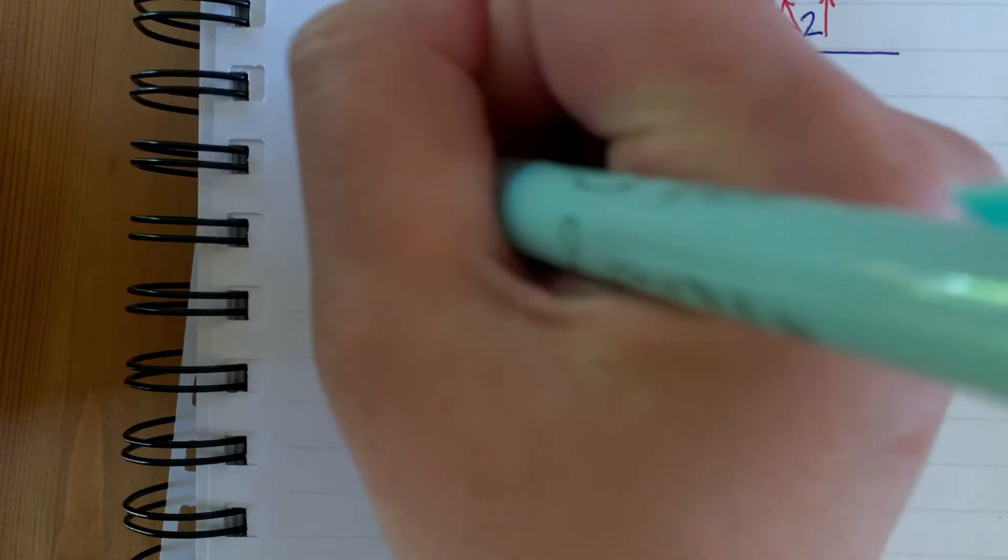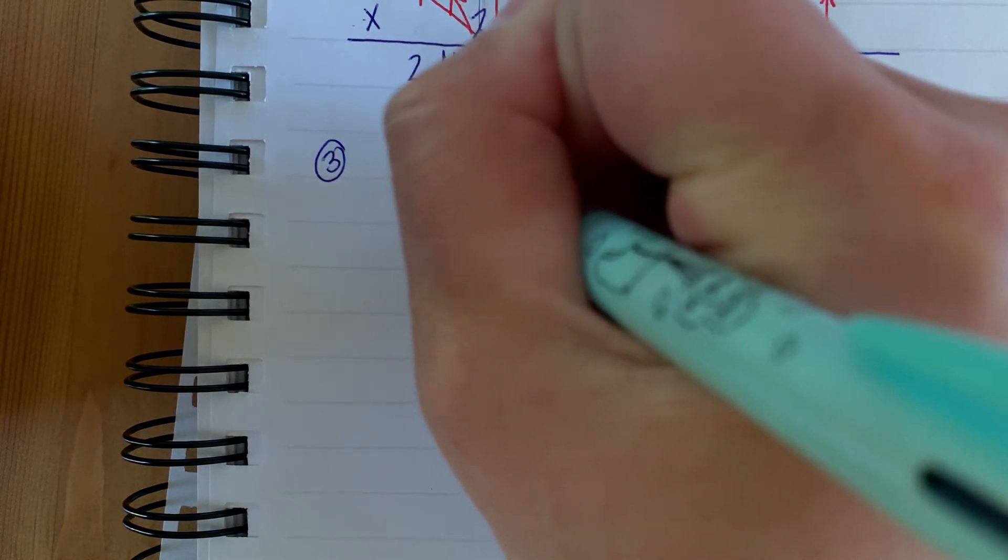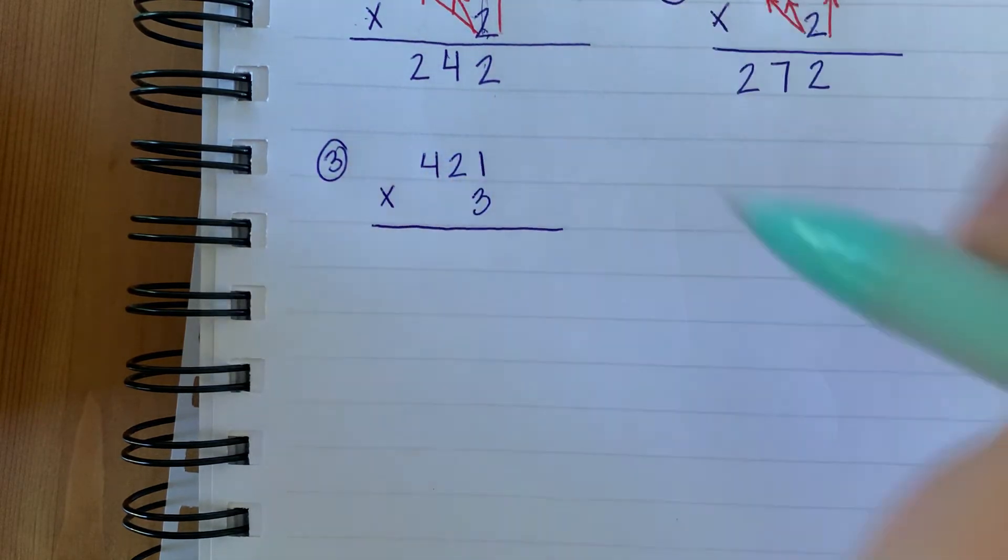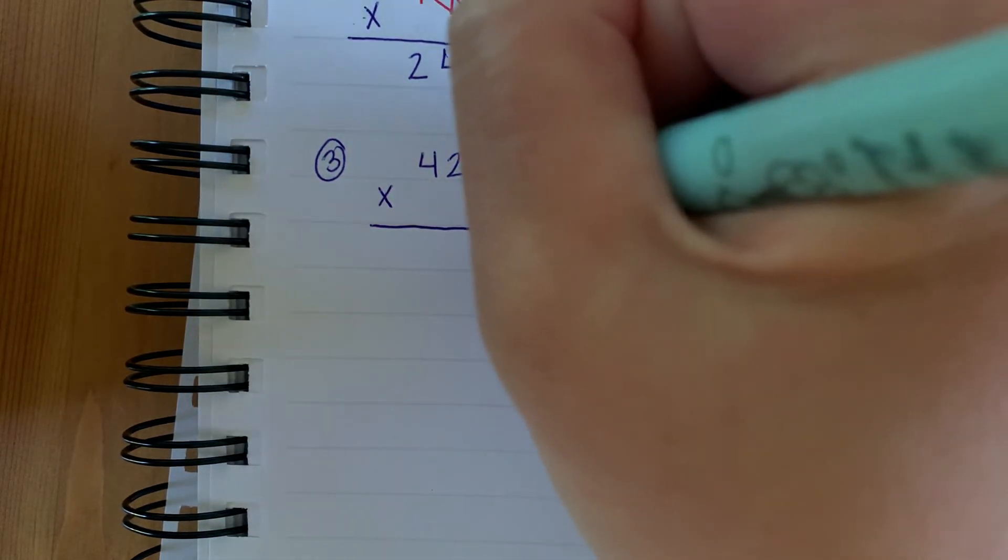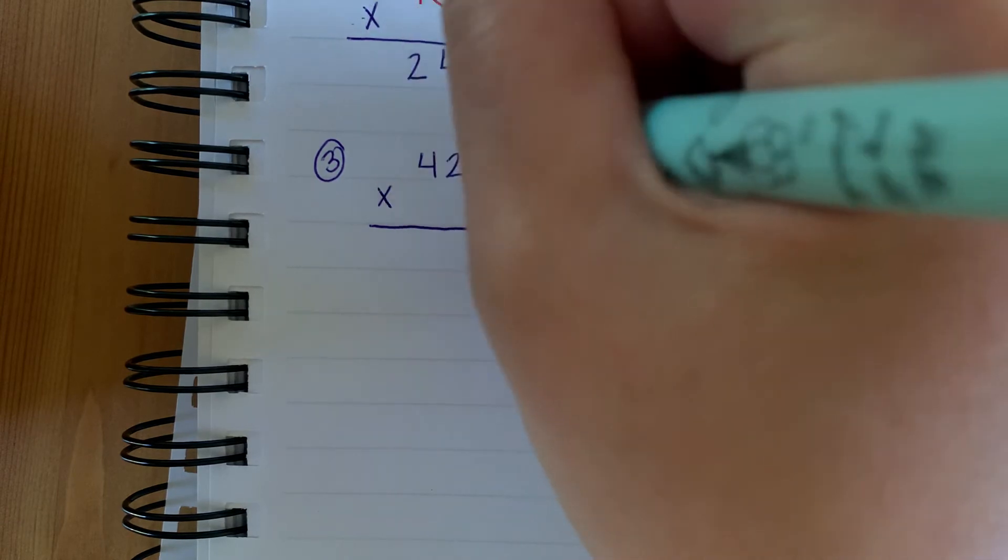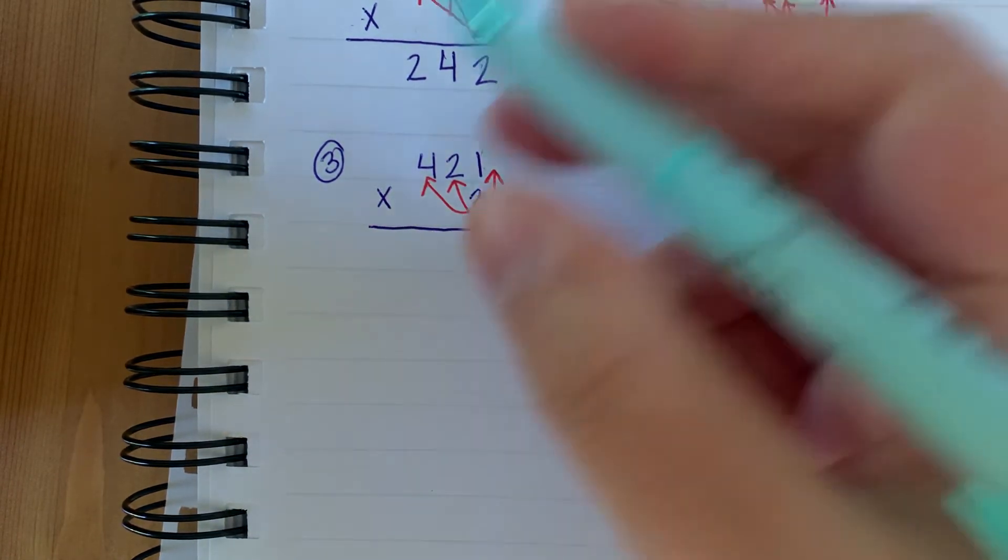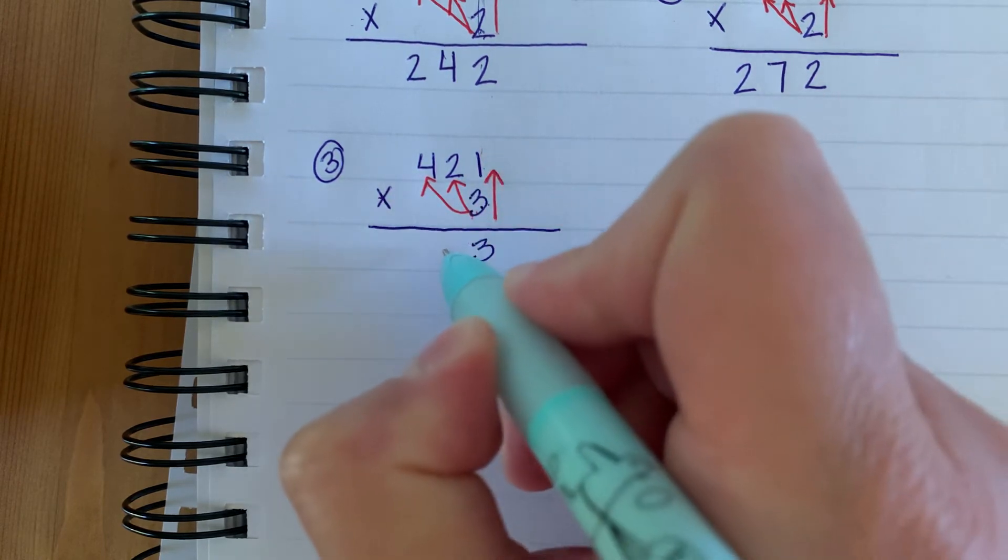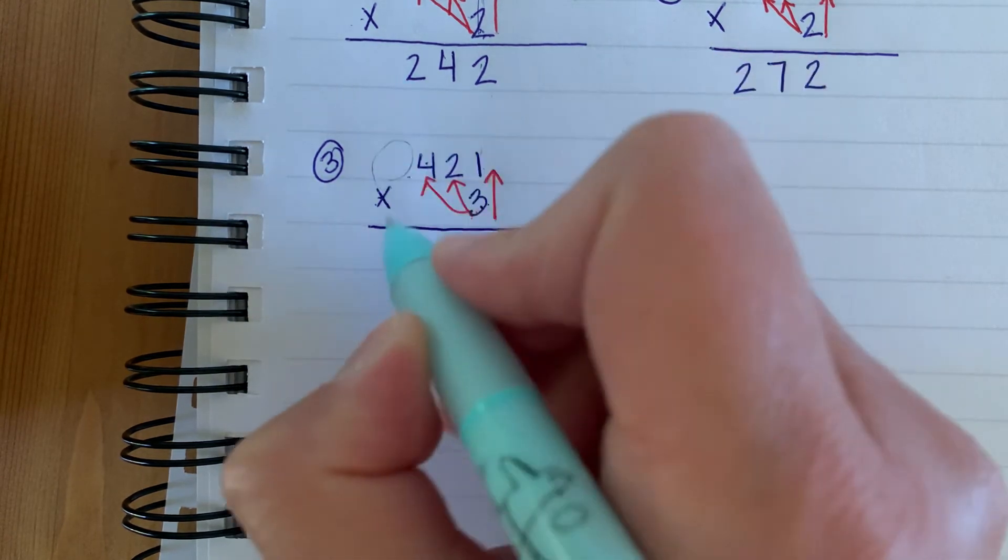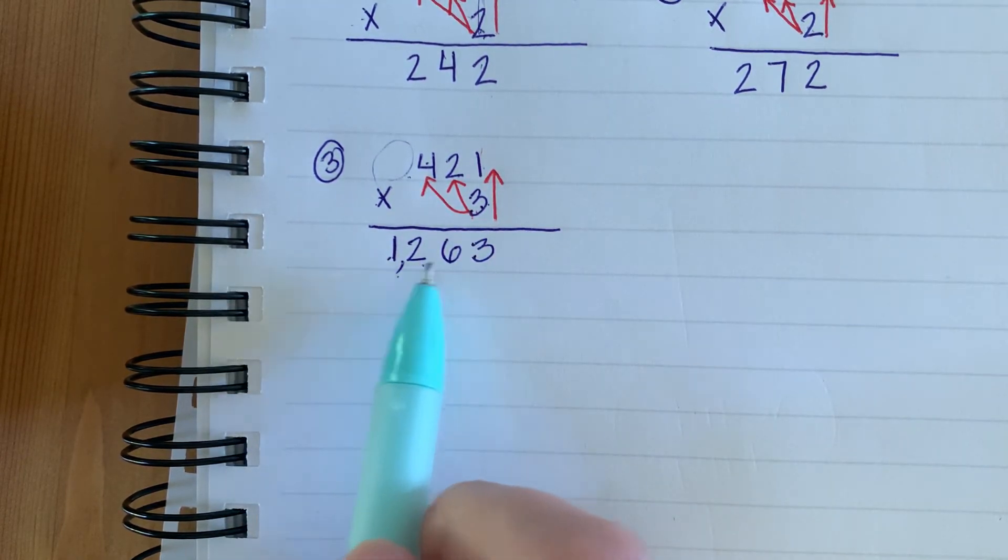Number three. Let's do 421 times three. Now we multiply. This is the first number you're going to multiply and then you're going to go across and then to the hundredth place. 3 times 1 is 3. 3 times 2 is 6. And 3 times 4 is 12. But since there's no other numbers here, you can bring 12, so the 1 and the 2 down. And the answer is 1,263.